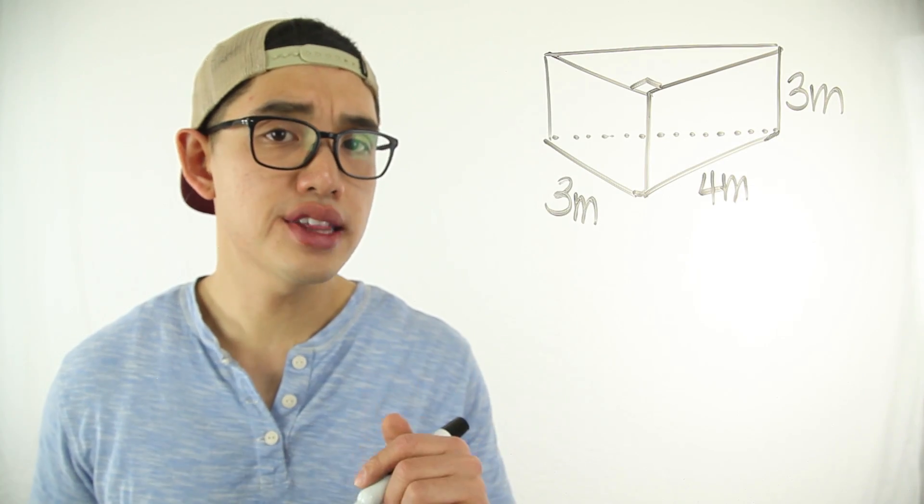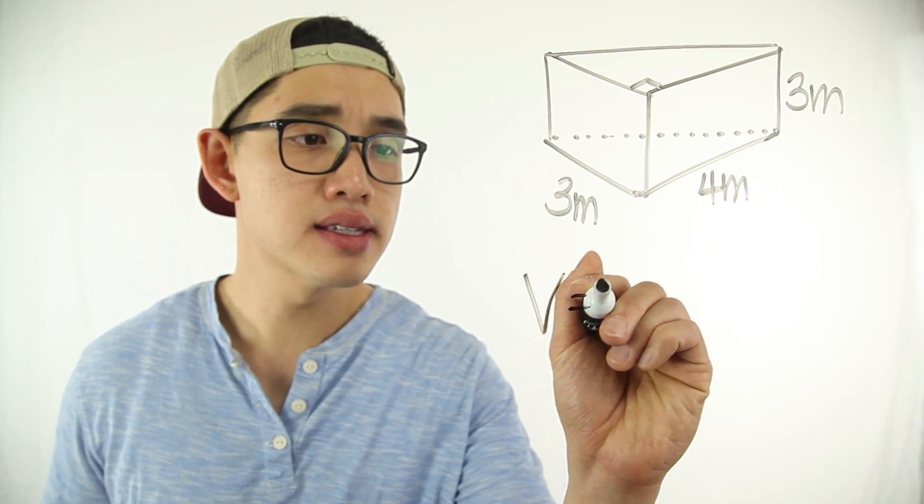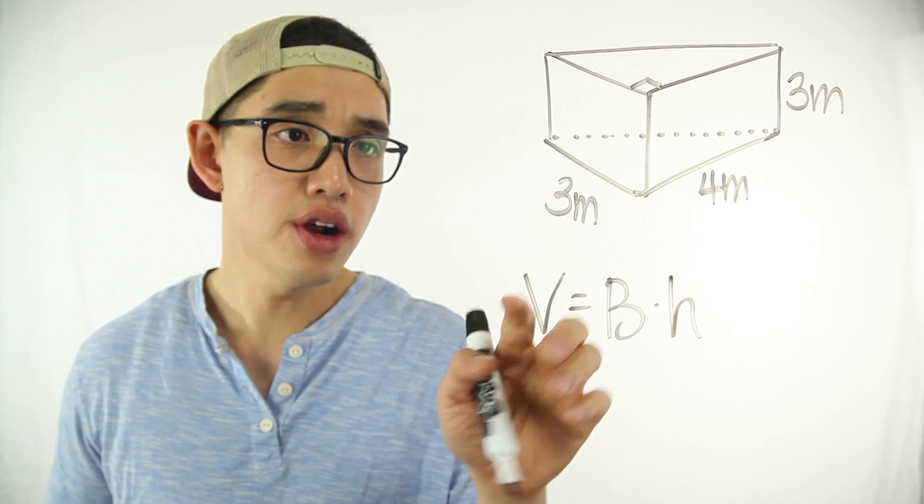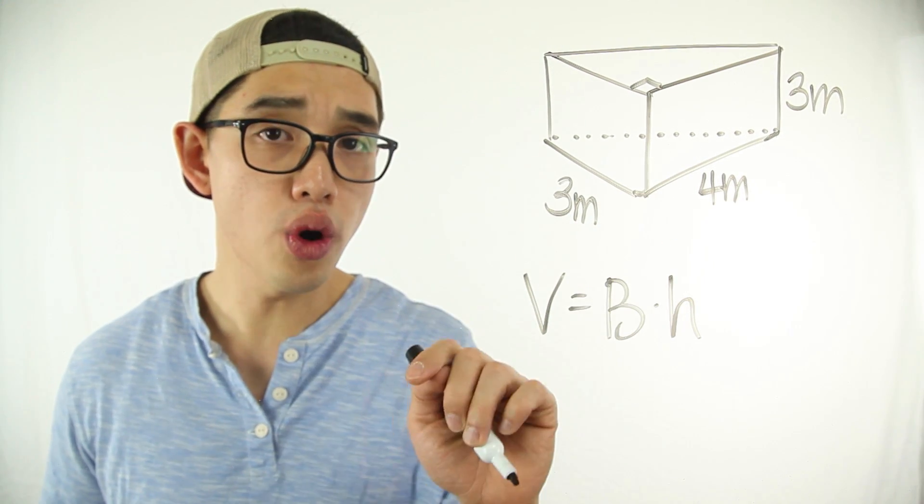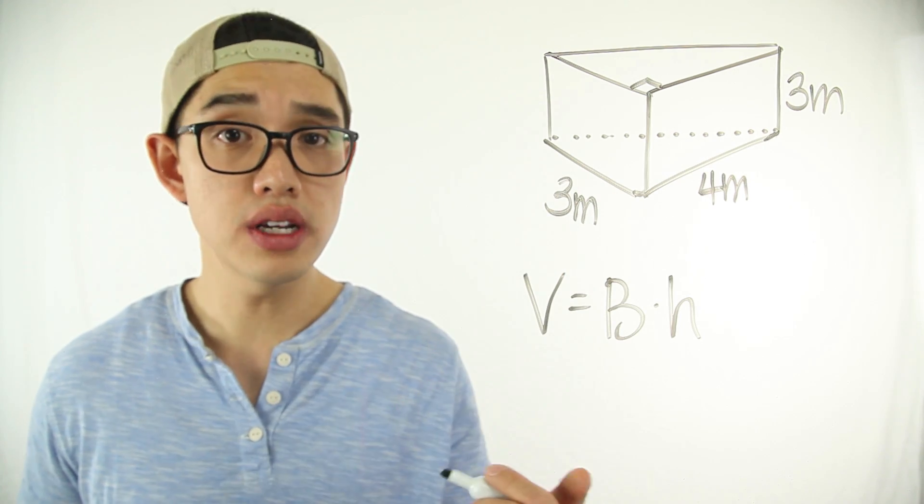Alright, let's do the problem. For this problem right here, just like the other example that we just did, we multiply the base times the height. In this problem right here, the base is going to be 3 times 4, which is 12, and then we're going to divide it by 2 since it's a triangle, which is going to be 6.